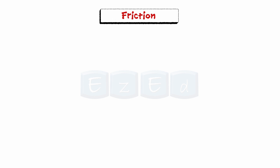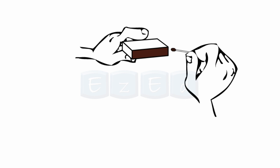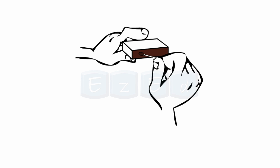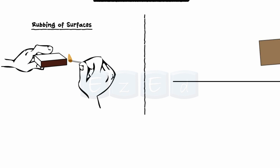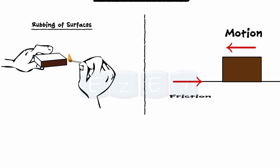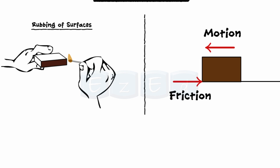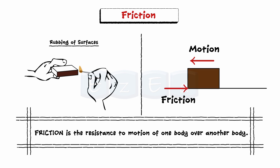What is friction? Whenever a tendency exists for motion of one body with respect to another body, involving rubbing of surfaces in contact, frictional forces are developed between the surfaces in contact, which always act in a direction to oppose motion. In simple words, friction is the resistance to motion of one body over another body.